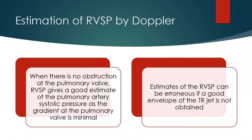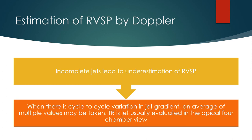Estimates of right ventricular systolic pressure can be erroneous if a good envelope of the TR jet is not obtained. Incomplete jets lead to underestimation of RV systolic pressure. When there is cycle-to-cycle variation in jet gradient, an average of multiple values may be taken. The TR jet is usually evaluated in the apical four-chamber view.